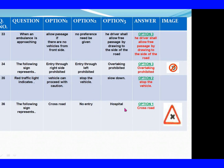Question 33: When an ambulance is approaching. Option 1: Allow passage if there are no vehicles from the front side. Option 2: No preference needs to be given. Option 3: Each driver shall allow free passage by drawing to the side of the road. The right answer is Option 3: Each driver shall allow free passage by drawing to the side of the road. Question 34: The following sign represents. Option 1: Entry through right side prohibited. Option 2: Entry through left prohibited. Option 3: Overtaking prohibited. The right answer is Option 3: Overtaking prohibited.